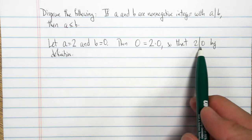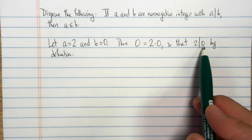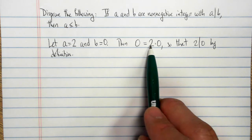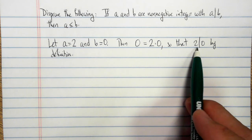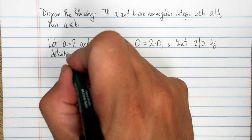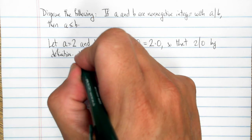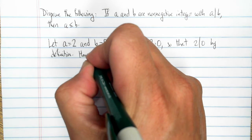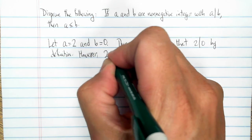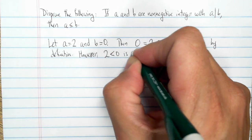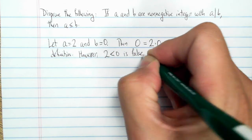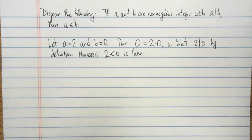So that 2 divides 0 by definition. So ordinarily, we don't think of 2 dividing 0, but 0 is even. 0 is equal to 2 times an integer. However, 2 is not less than 0. 2 less than 0 is false.